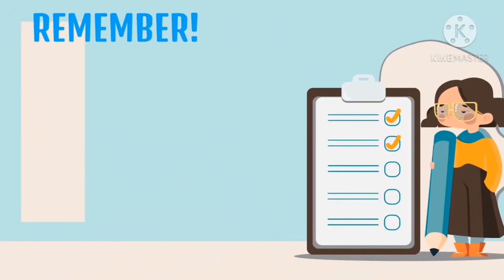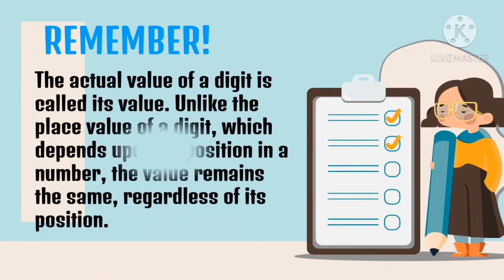Remember that the actual value of a digit is called its value. Unlike the place value of a digit which depends upon its position in a number, the value remains the same regardless of its position.